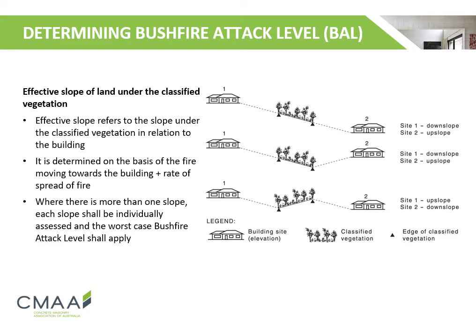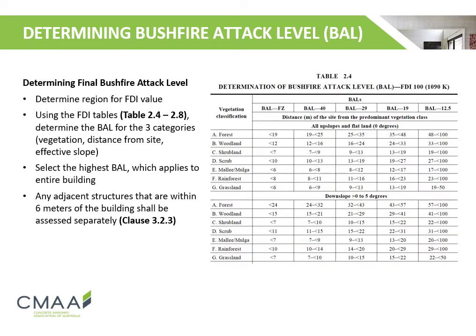On the right, we can see different orientations of effective slope relative to the two buildings. This is the table used to determine the overall bushfire attack level based on the aforementioned parameters. Firstly, we determine the fire danger index or FDI value to find the appropriate bushfire attack level table. From there, we determine the bushfire attack level for the three categories: vegetation, distance from site, and effective slope. We then select the highest bushfire attack level, which applies to the entire building.